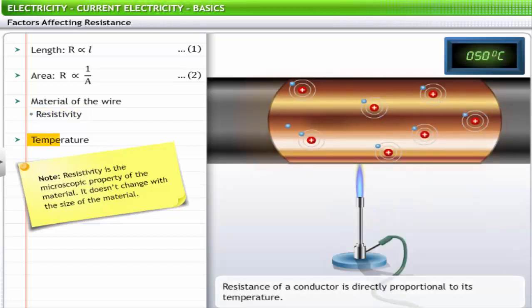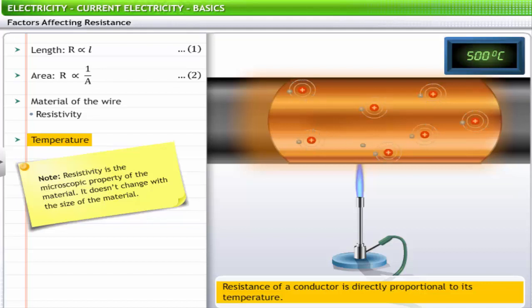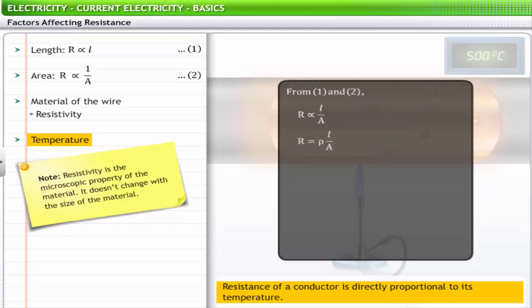The fourth factor that impacts the resistance of a conductor is temperature. For most materials, resistivity increases with increasing temperature. The variables affecting resistance can be mathematically written as R is equal to rho L divided by A, where R is the resistance in ohm, rho is the resistivity in ohm meter, L is the length of the conductor in meter, and A is the cross-sectional area of the conductor in meter square.